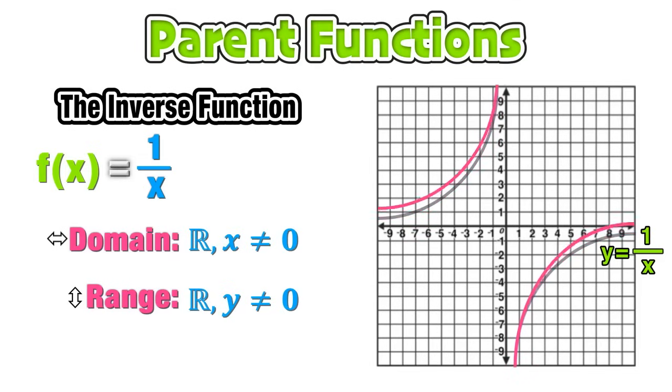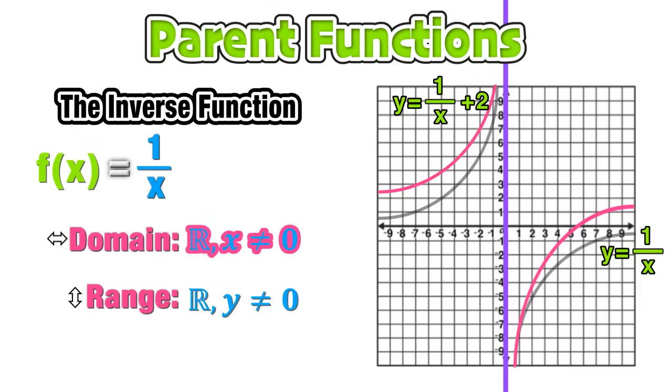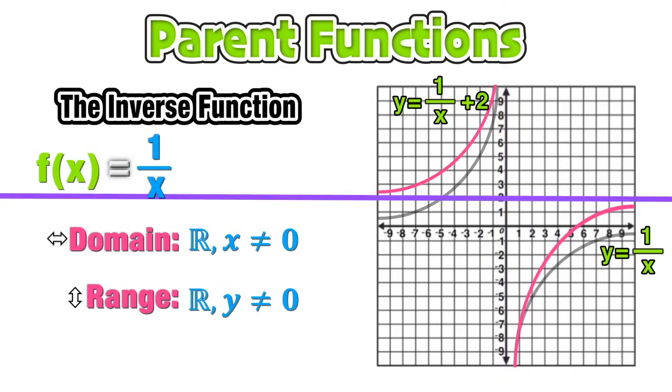If we transform this parent function by shifting it up 2 units on the y-axis, we have a new equation y = 1/x + 2. Notice that the location of our vertical asymptote at x = 0 did not change, so the domain will not change. Notice, however, that our horizontal asymptote has shifted up and now exists at y = 2, so the new domain will be all real numbers except for 2.